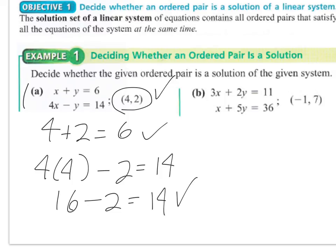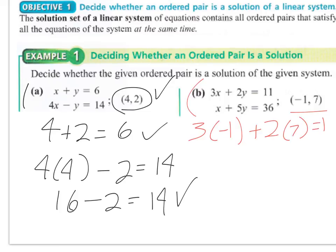If we look at the second system we have here, 3x plus 2y equals 11, x plus 5y equals 36, and then the ordered pair they want us to try is negative 1, 7. I just plug the negative 1 in for x and the 7 in for y, and I get negative 3 plus 14 equals 11, so that is true.